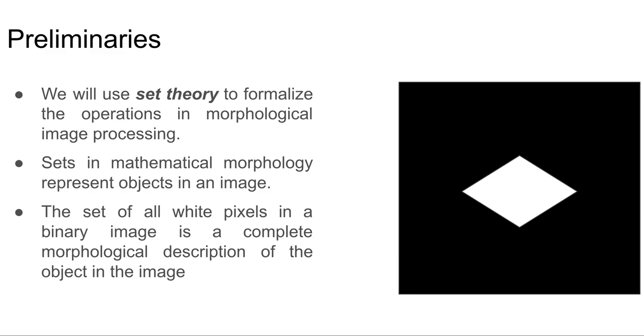If you look at the image that I have given on the right side, you can see a diamond-shaped white pixels on a black background. Here the area of my interest is the diamond-shaped object. I will be collecting all the coordinates of those white pixels and then I will form a set of all those coordinates, and that will form the object in the context of mathematical morphology. The set of all white pixels in a binary image is a complete morphological description of the object in the image.